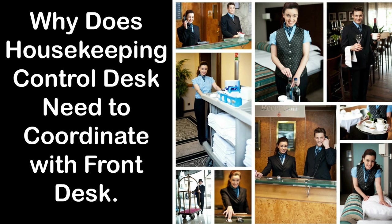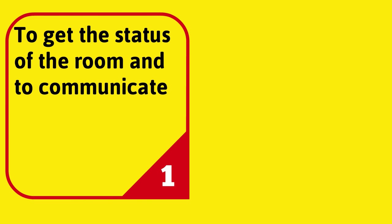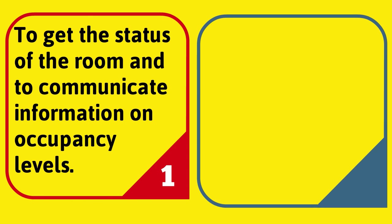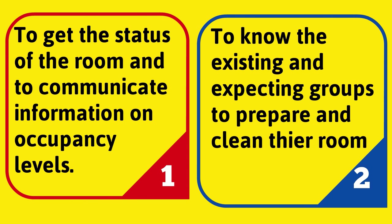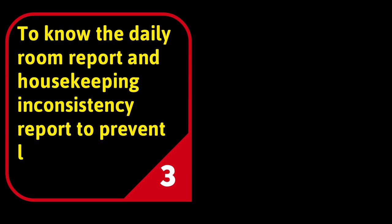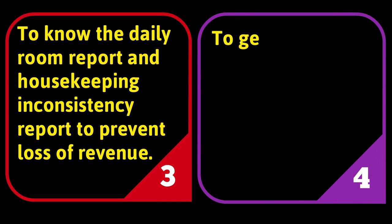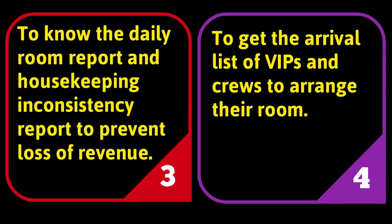Why does the Housekeeping Control Desk need to coordinate with the front desk? To get the status of rooms and to communicate information on occupancy levels; to know the existing and expected groups in order to prepare and clean their rooms; to know the daily room report and housekeeping inconsistency report; to prevent loss of revenue; and to get the arrival list of VIPs and crews to arrange their rooms.